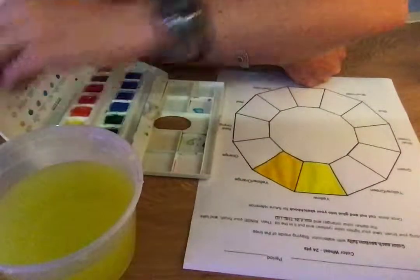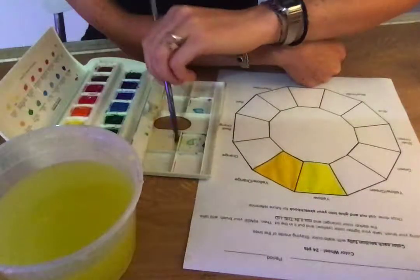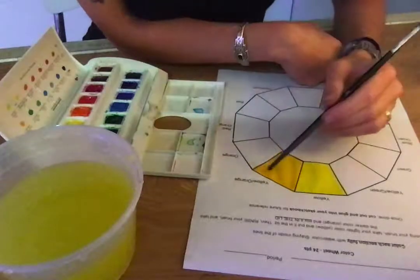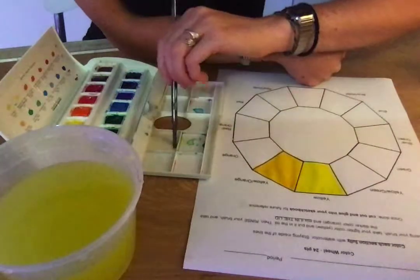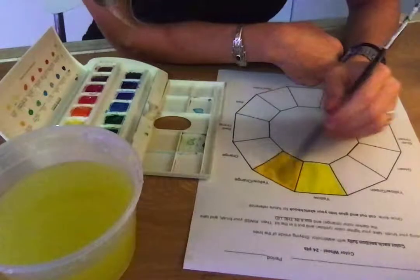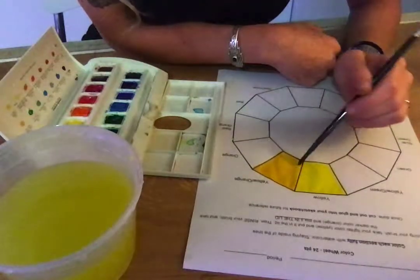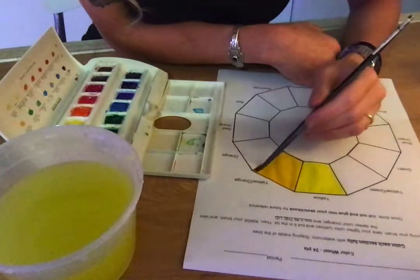And I actually wanted to make it a teensy bit more orange, so I'm going to go over it with one more pass of a little bit of orange. So when you're mixing your yellow colors—so yellow orange and yellow green—those are probably going to be the most challenging because yellow is the lightest.